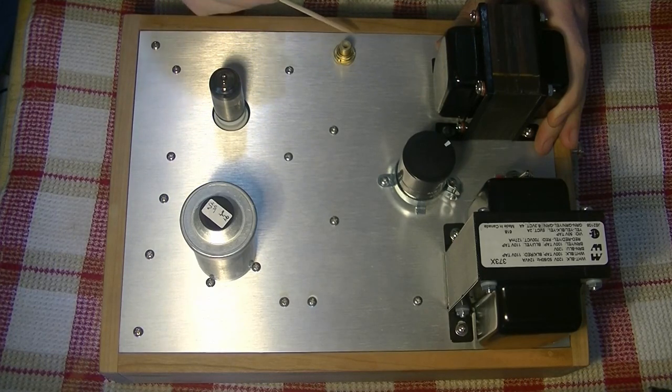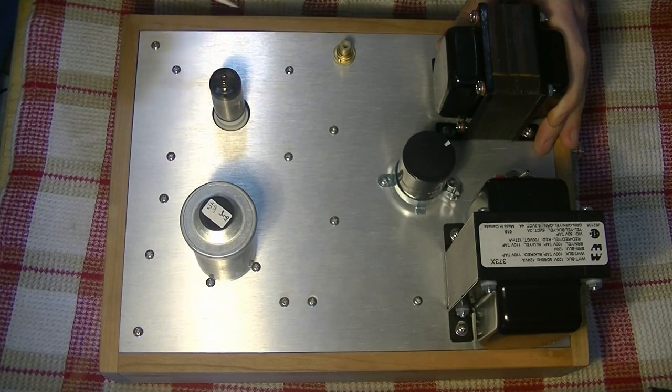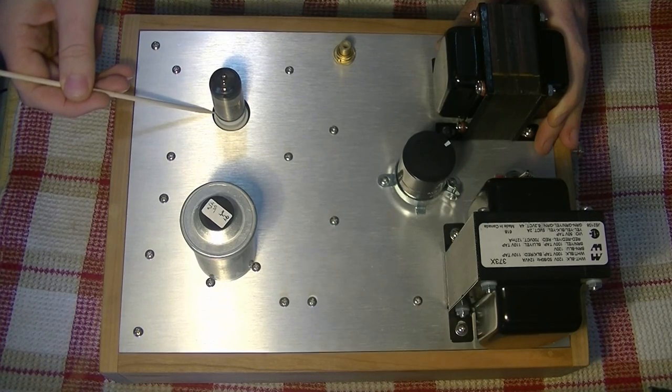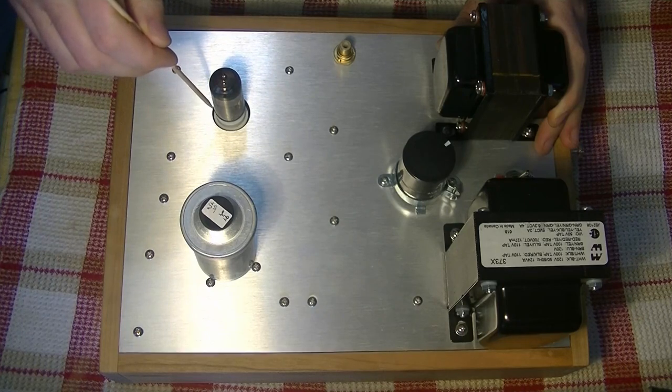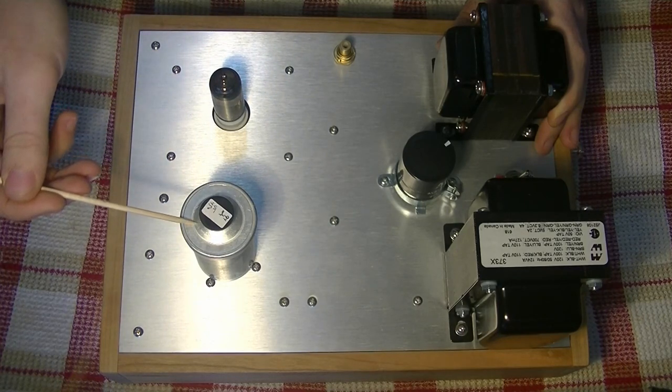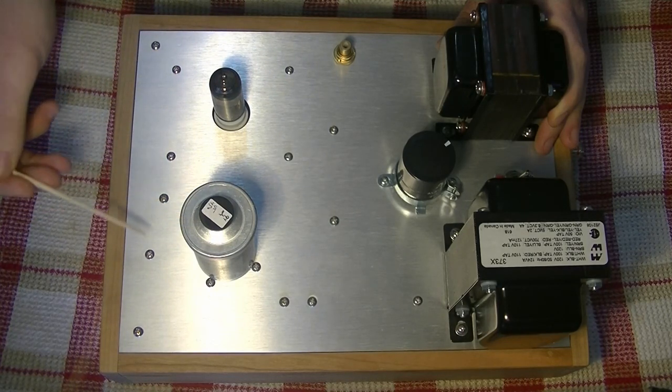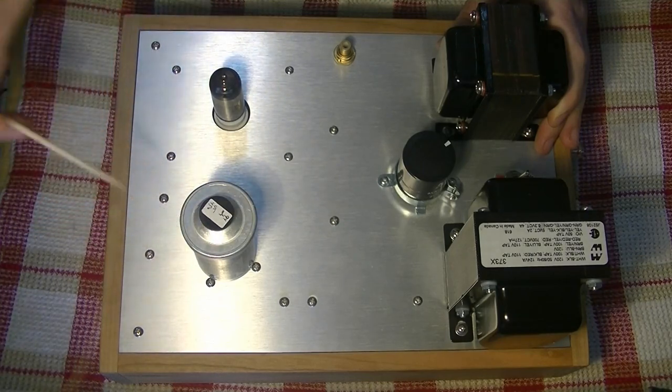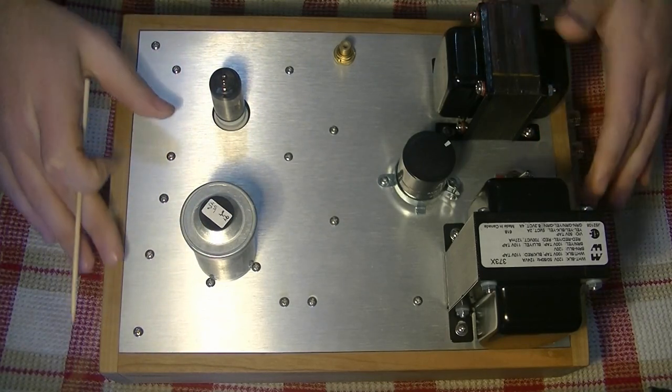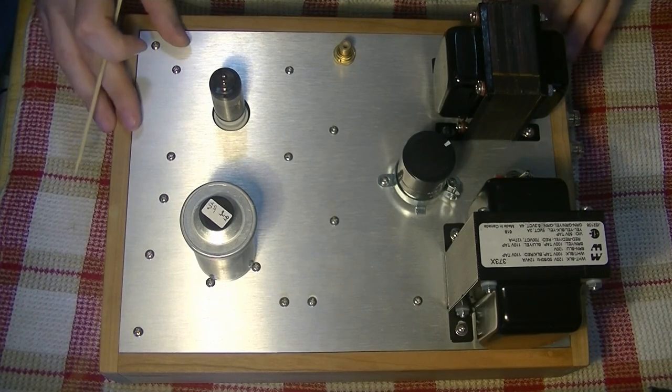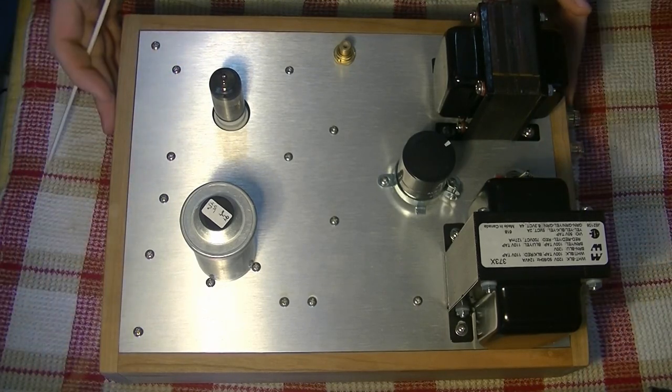Here is our RCA in. And this is our driver tube, the 6N6P in a nine pin socket. And this is our power tube, the GU50 in its specialized 7 pin socket. All this is mounted to this top aluminum plate. And the plate is mounted in this cherry wood plinth. Let's take a look at the back here.